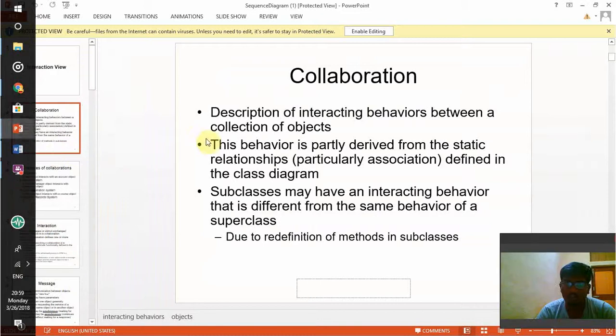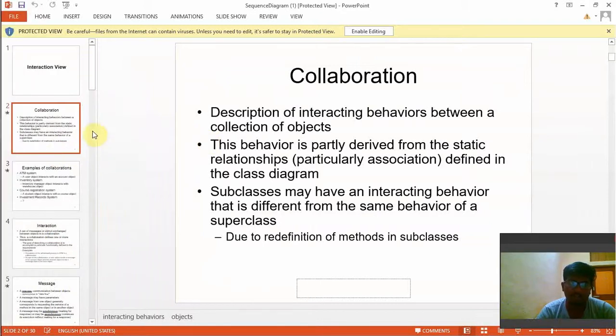What is meant by collaboration? A collaboration diagram is a description of interacting behaviors between a collection of objects. This behavior is partly derived from the static relationships defined in the class diagram.